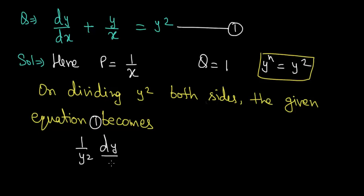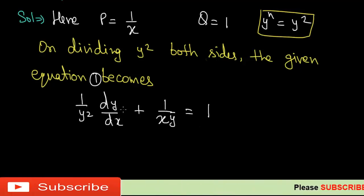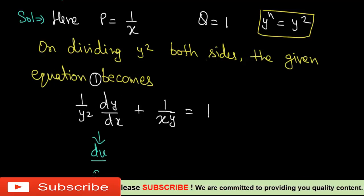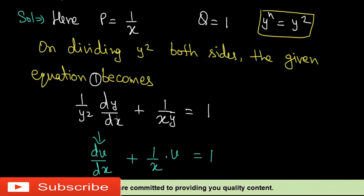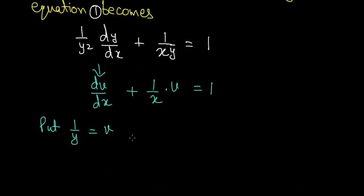After dividing by y², the equation becomes (1/y²)(dy/dx) + (1/x)(1/y) = 1, so y² no longer appears on the right-hand side. To convert this into a linear equation, we substitute 1/y = v and differentiate to get −(1/y²)(dy/dx) = dv/dx.